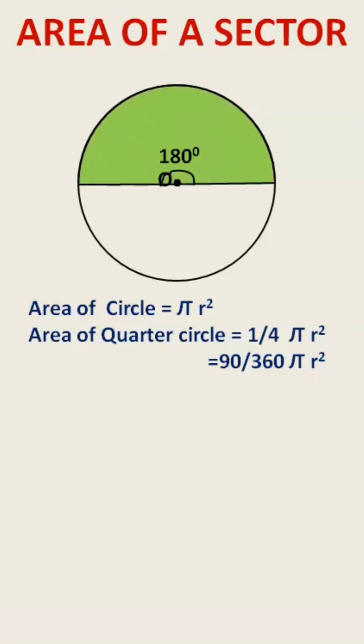Now let us take a semicircle. The area of the semicircle will be half of pi r square. As it is a half of the circle, we can write it as half into pi r square.